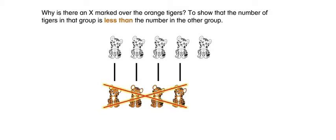Why is there an X marked over the orange tigers? To show that the number of tigers in that group is less than the number in the other group.